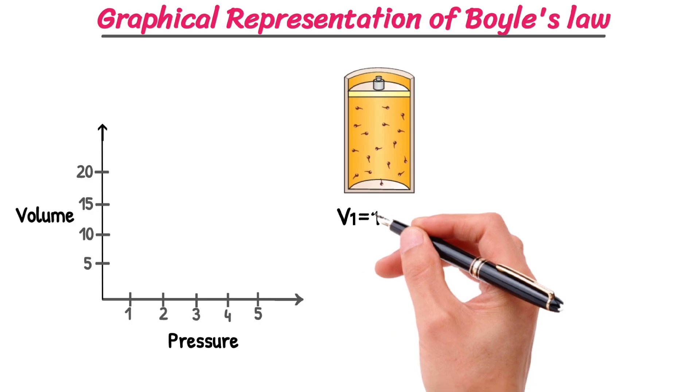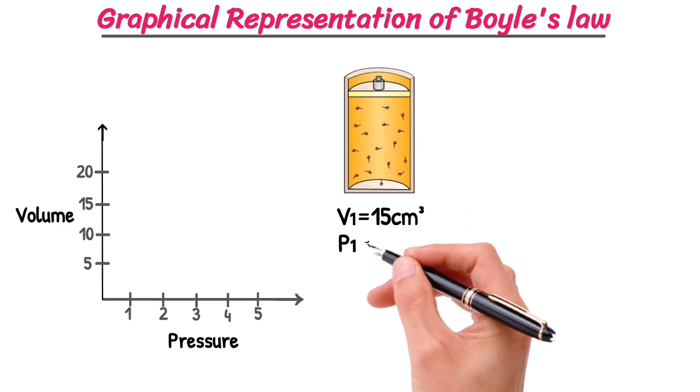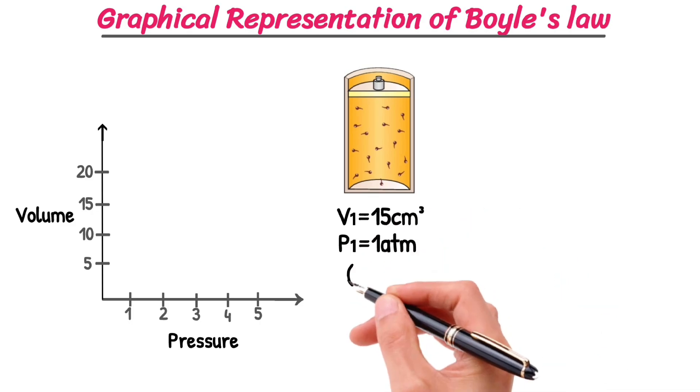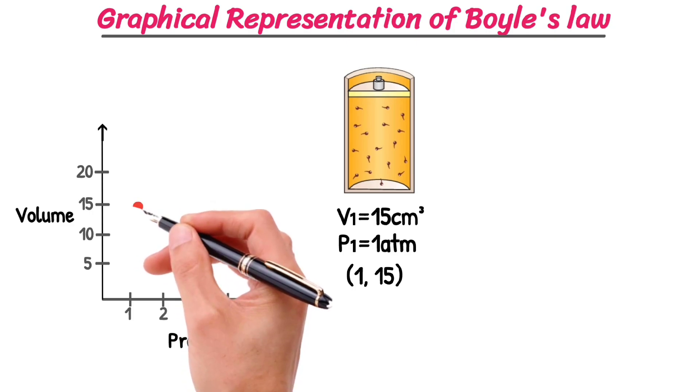Let's say our initial volume is 15 centimeter cube, and the pressure is 1 atmosphere. Our first coordinate is (1, 15). So here's what it looks like on the graph.